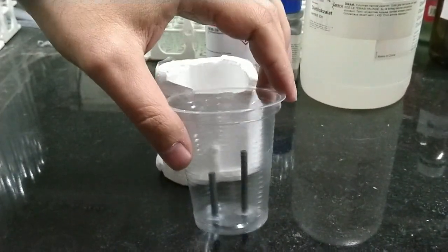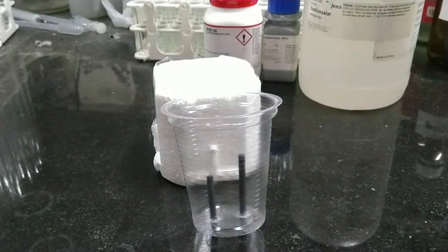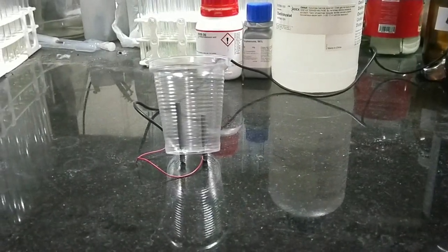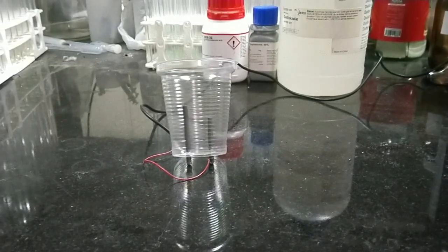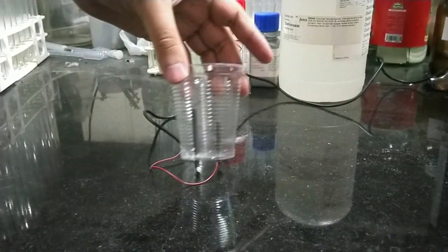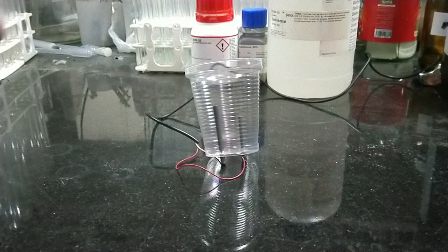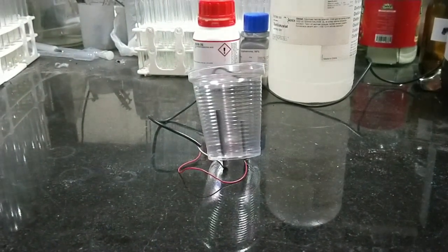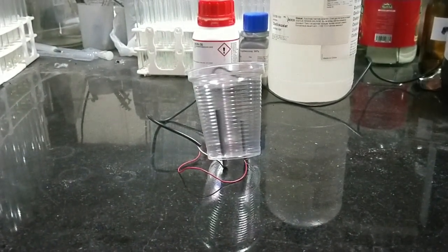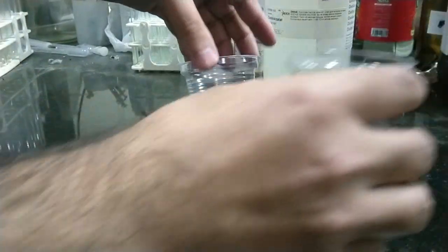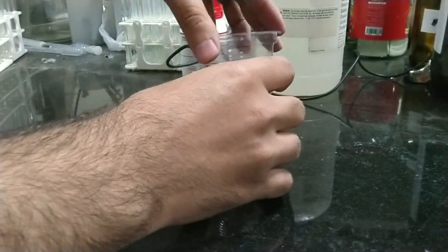So let's do the electrolysis. I attached the cables of my four volts adapter to the electrodes of my electrolytic cell. Now I add another plastic container to help it stand better.